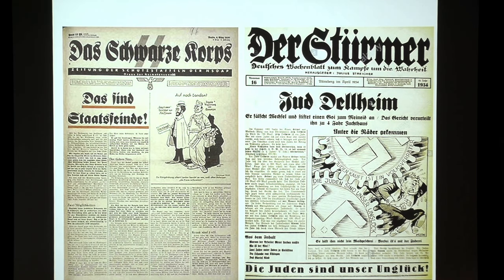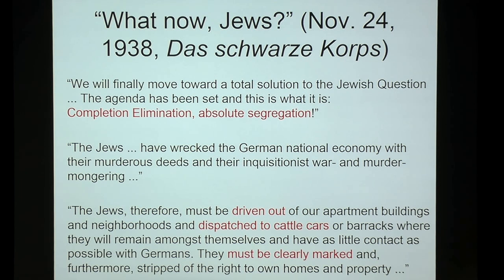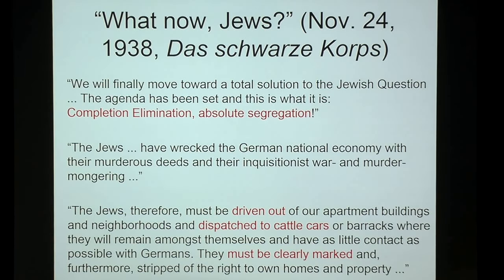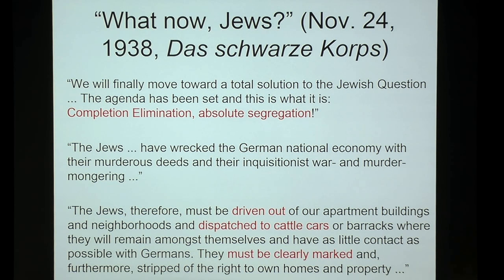One of the last readings assigned was 'Was nun, Juden?' — 'What Now, Jews?' — published two weeks after Kristallnacht. The Schwarze Korps, the official SS newspaper founded in 1935 with a circulation of several hundred thousand — at its height close to a million — printed: 'We will finally move toward a total solution to the Jewish question.' The agenda: complete elimination, absolute segregation. In a major newspaper in 1938, circulated throughout Germany by the official SS newspaper, it invents its reasons: 'The Jews have wrecked the German national economy with their murderous deeds.' And it proposes action: 'Jews must be driven out of our apartment buildings and neighborhoods and dispatched to cattle cars or barracks where they'll remain among themselves, clearly marked, and stripped of the right to own their homes and property.'